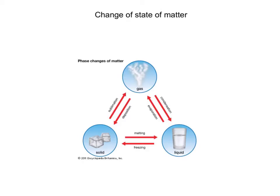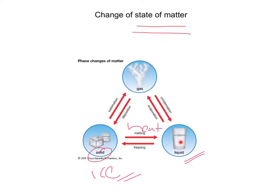You also need to know that we can change the state of matter. If you have a solid — like ice — we can turn it into a liquid by adding heat, and that process is called melting. Whereas the other way around, if we have a liquid and take away the heat, we freeze the liquid to turn it into a solid.